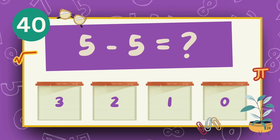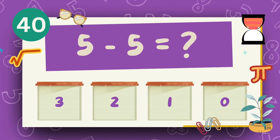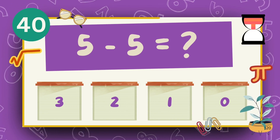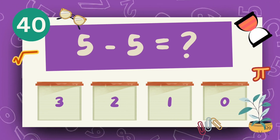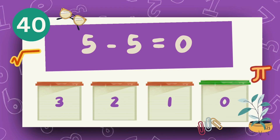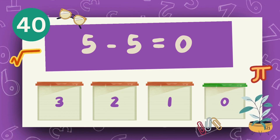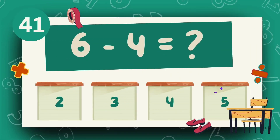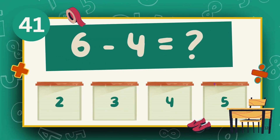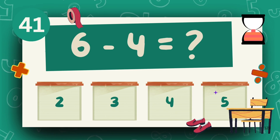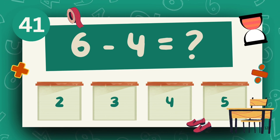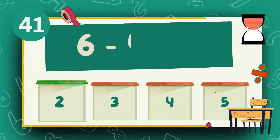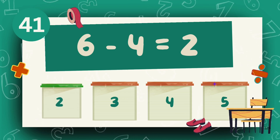What is 5 minus 5? The answer is 0. What is 6 minus 4? The answer is 2.